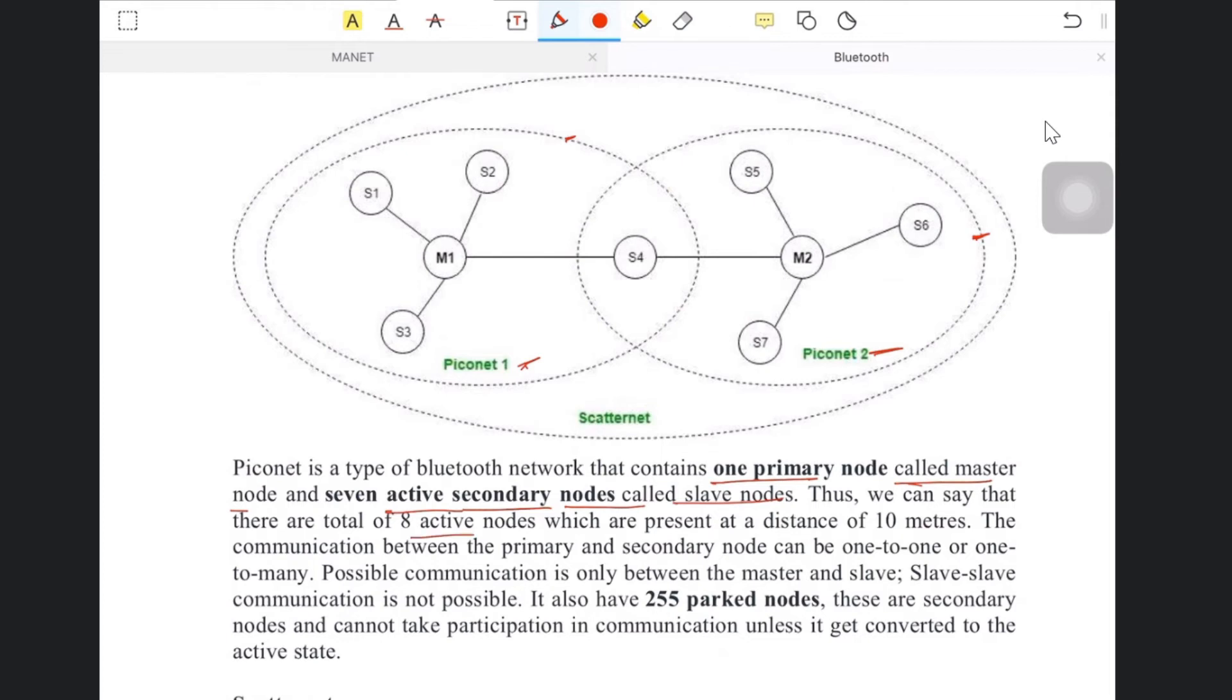There are a total of eight active nodes present at a distance of 10 meters. Communication between primary and secondary nodes can be one-to-one or one-to-many. Possible communication is only between the master and slave. Slave-to-slave communication is not possible.